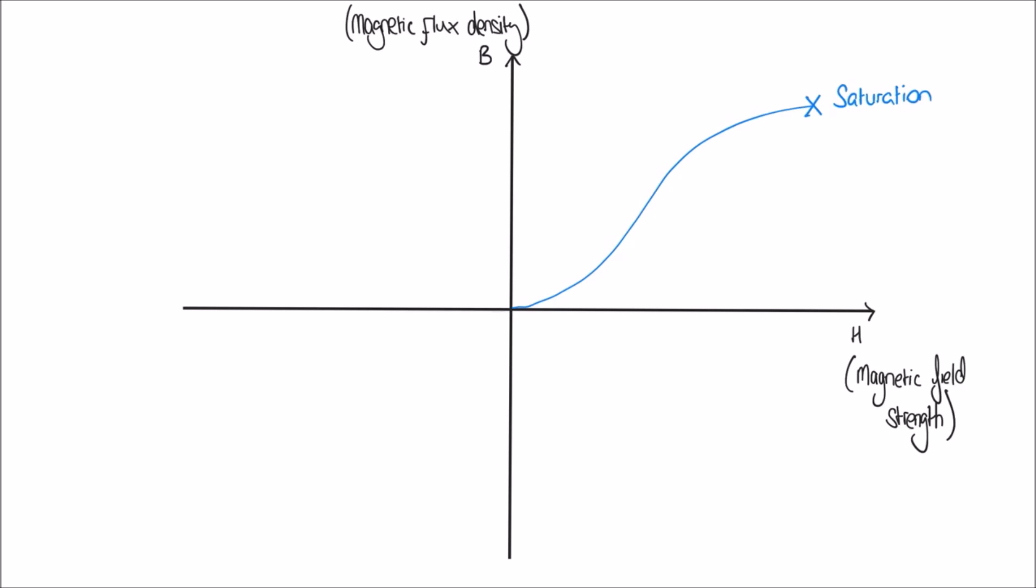Let's say that we remove our magnet. So H decreases back to zero. But what we saw in our analogy was that the paper clips retain some of their magnetism, some of their magnetic flux density. And so B is not going to return to zero. What we'll see is something like this. H has returned to zero, but B has still retained some of its magnetism.